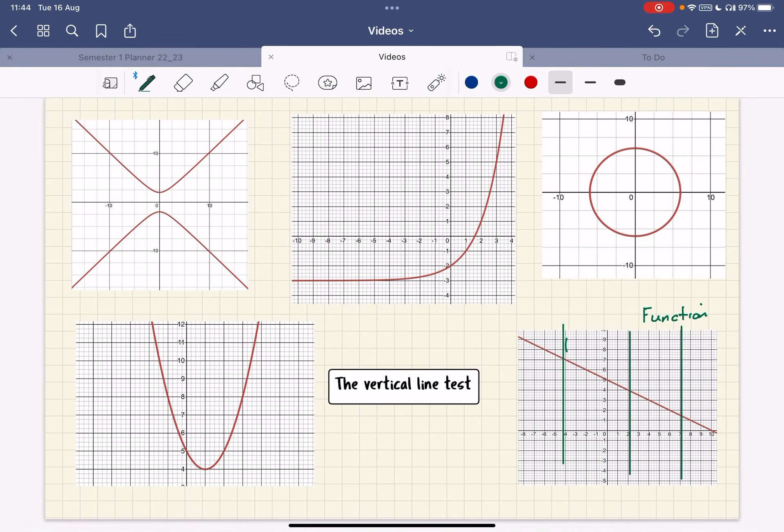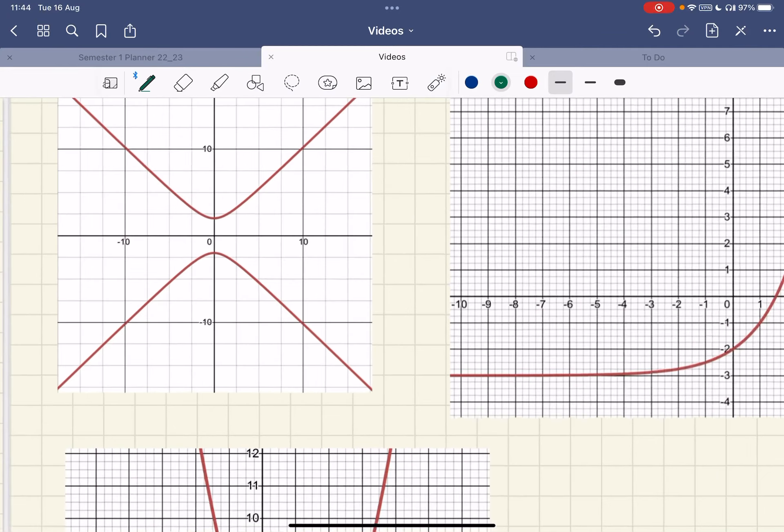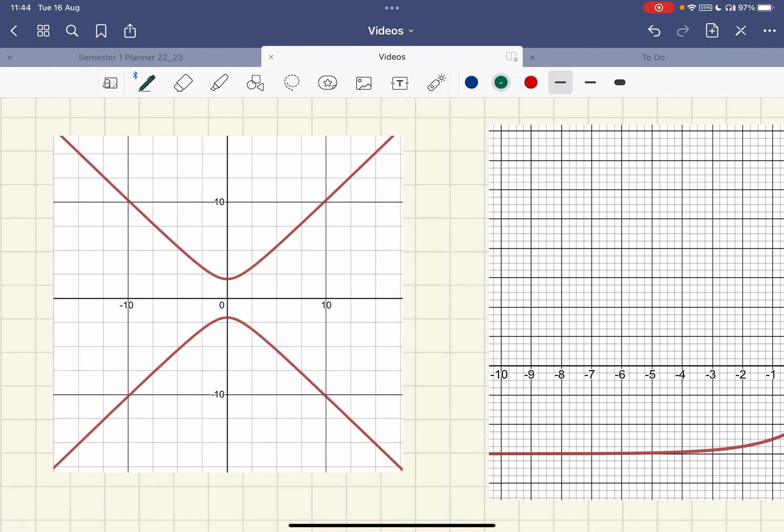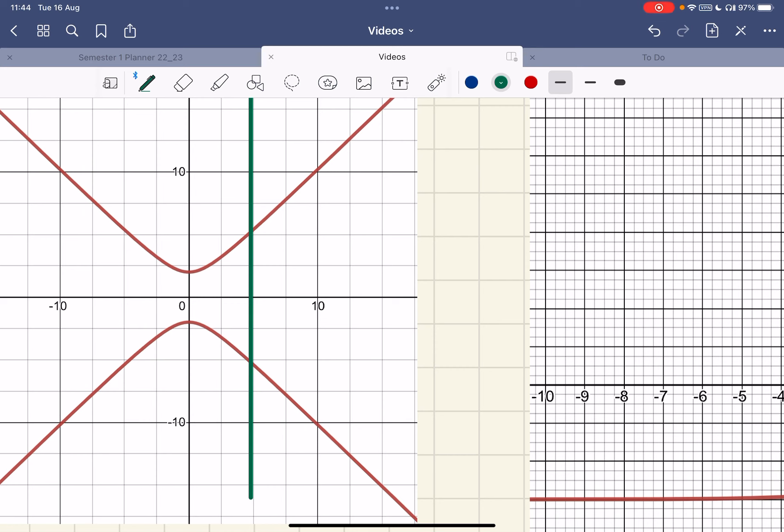So let's just go to the top corner and I want to place a vertical line so that it goes through the function twice. Well, I just have to go to one place - there we go, it's passed through the function twice and therefore this is not a function.